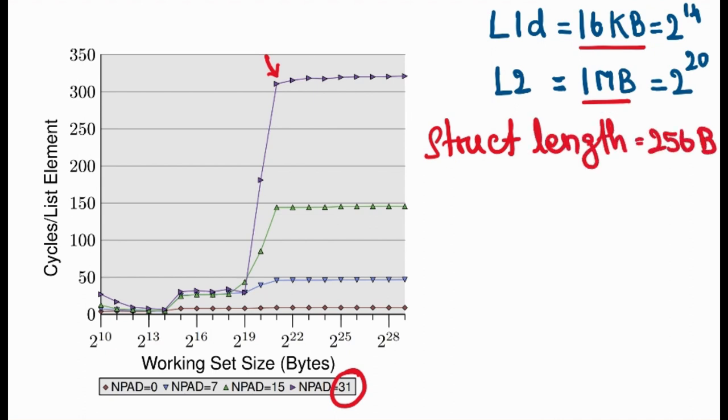Let's just consider the purple graph with the triangle. The n-pad size for this graph is 31. In that case, the struct length is going to be 256 bytes. When you see the graph, as long as the data set is less than 16 KB, which is at this point, 2 power 14, the access time for each member is in single digit cycles.